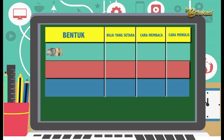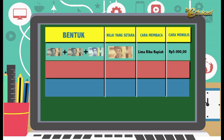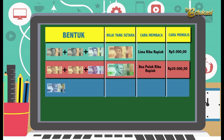Bapak akan menerangkan pemahaman konsep tentang nilai mata uang. Perhatikan tabel berikut. Di sini ada mata uang 2.000 ditambah 2.000 ditambah 1.000, ternyata nilainya adalah 5.000 rupiah, atau setara dengan uang pecahan 5.000 rupiah. Cara menulisnya: Rp5.000,00. Berikutnya, ada 5.000 ditambah 5.000 ditambah 10.000, hasilnya 20.000 rupiah, atau setara dengan uang pecahan 20.000 rupiah. Di sini ada 50.000 rupiah ditambah 50.000 rupiah, hasilnya 100.000 rupiah. Kita harus menyesuaikan pecahan itu dengan pecahan yang ada.